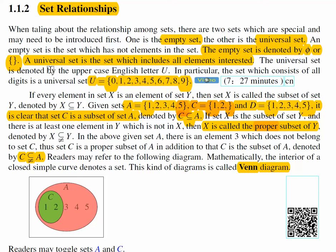Another special set is the universal set, which is totally opposite to the empty set. A universal set is the set which includes all elements of interest. For example, if we are interested in studying all the digits, then 0, 1, 2, 3, 4, every digit from 0 to 9 is included inside the set U. Then U will be called the universal set.